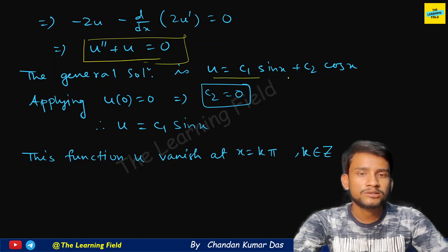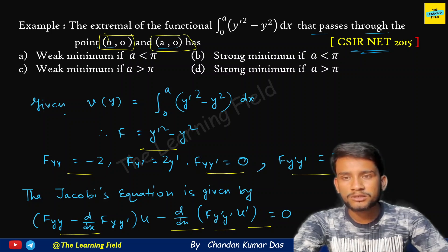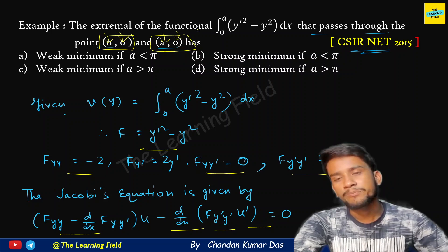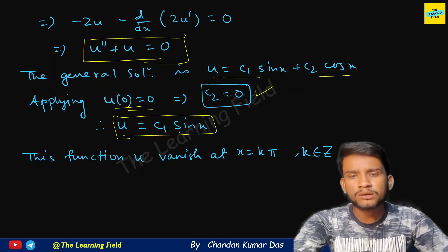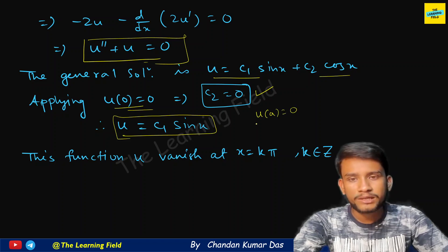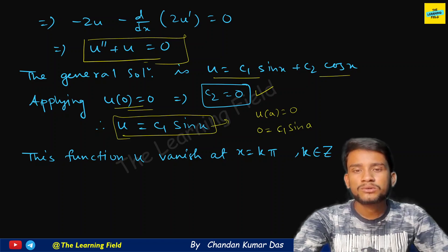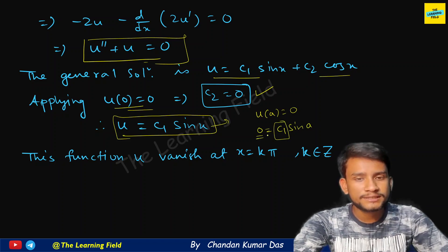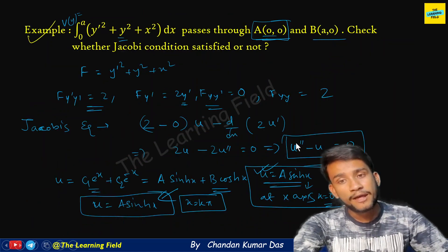The general solution of u'' + u = 0 is u = c₁ sin(x) + c₂ cos(x). Applying u(0) = 0 — since the curve passes through (0,0) and (a,0) — gives c₂ = 0, so u = c₁ sin(x). Applying u(a) = 0 gives c₁ sin(a) = 0. For a non-trivial solution, sin(a) = 0, meaning a = kπ for integer k. So the pencil curve u = c₁ sin(x) vanishes at x = kπ.